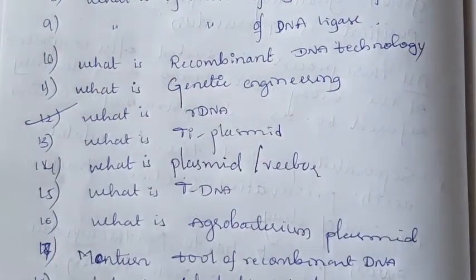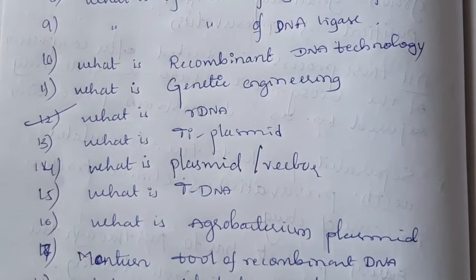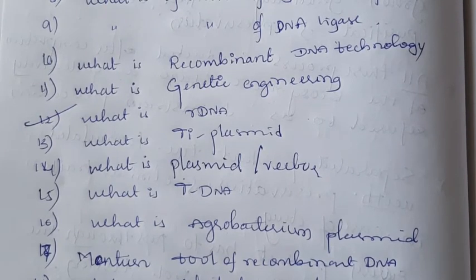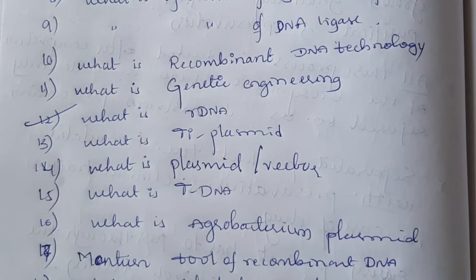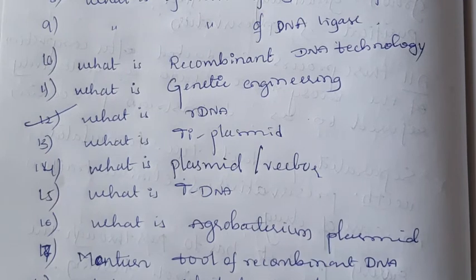Next question: what is Ti plasmid? Ti plasmid is the plasmid which is present in the bacterium strain Agrobacterium tumefaciens, which has the DNA that is very necessary for recombinant DNA technology in the case of plants. Agrobacterium is a species that helps for genetic engineering.